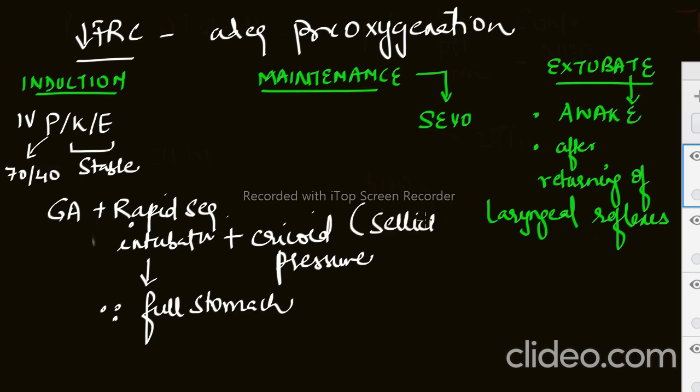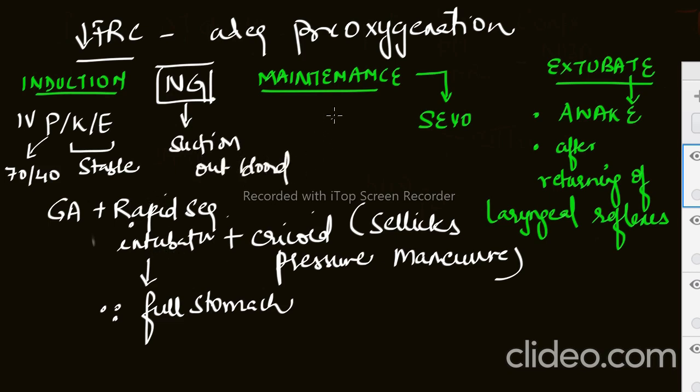Rapid sequence intubation with cricoid pressure. We want to prefer rapid sequence intubation because in the history we saw the patient is full stomach, so this will be the preferred technique. Cricoid pressure is also known as Sellick's maneuver. They can ask what is Sellick's maneuver, how much newton pressure will you give in pediatric population, etc. Also beforehand, before inducing the patient, you should insert a nasogastric tube so you can suction out the blood if the patient has swallowed some blood. We did adequate pre-oxygenation, put the NG tube, and then induce the patient with either ketamine or etomidate, then do rapid sequence intubation.